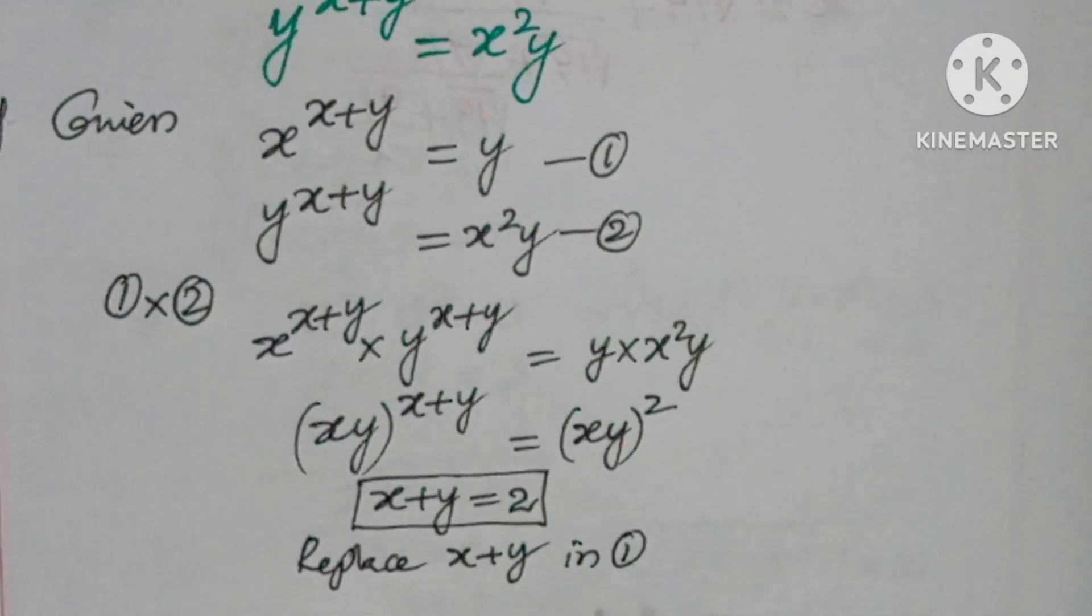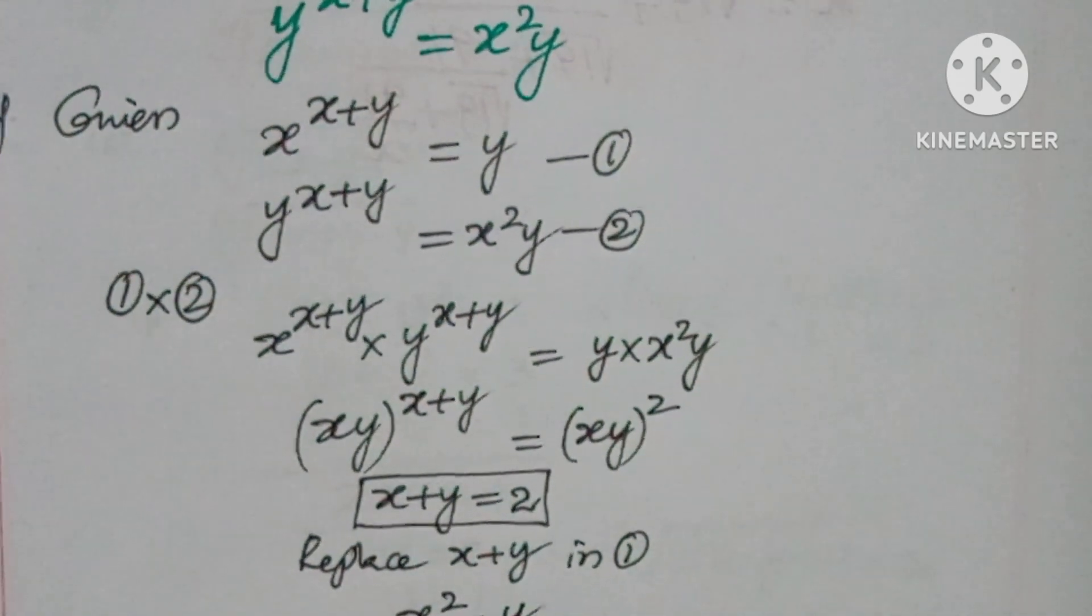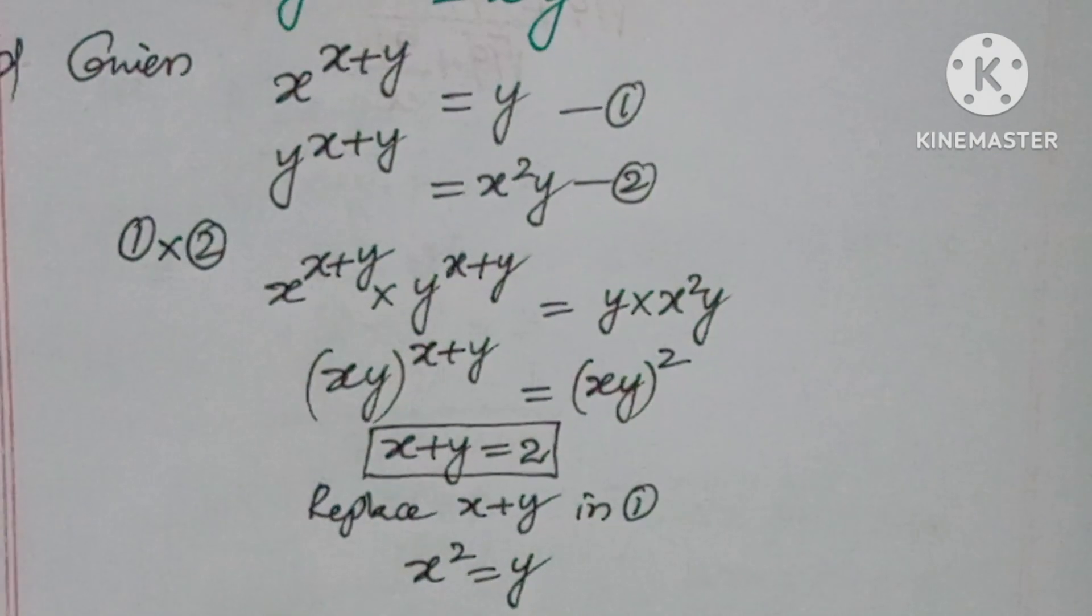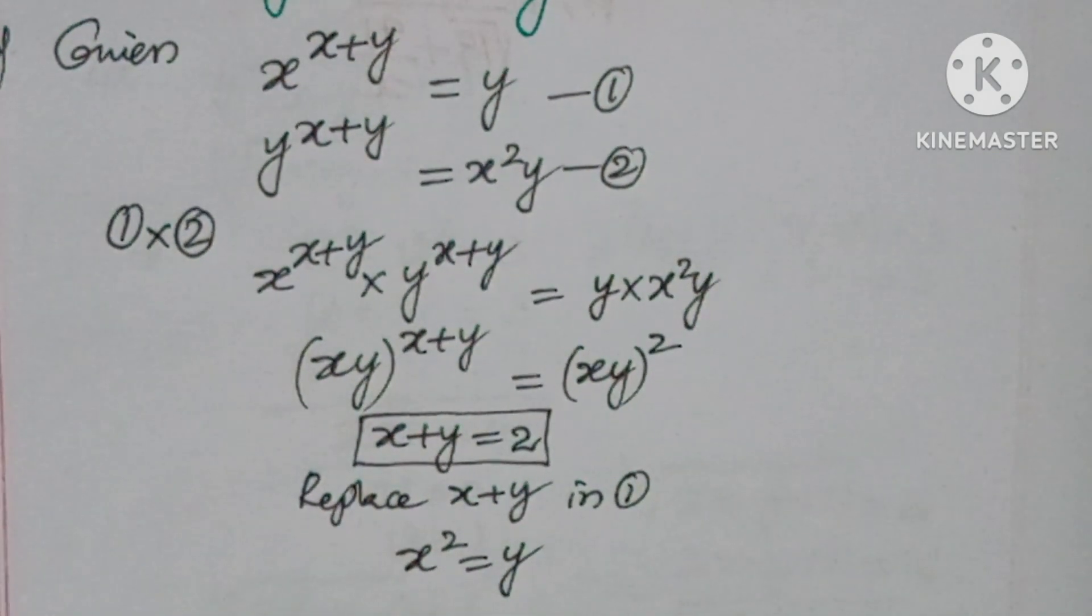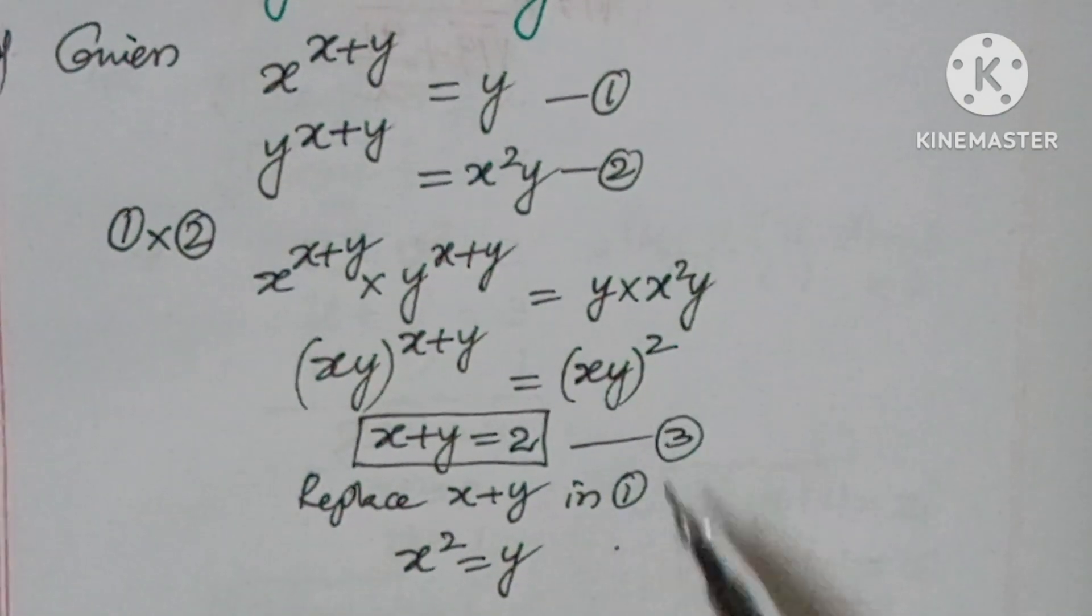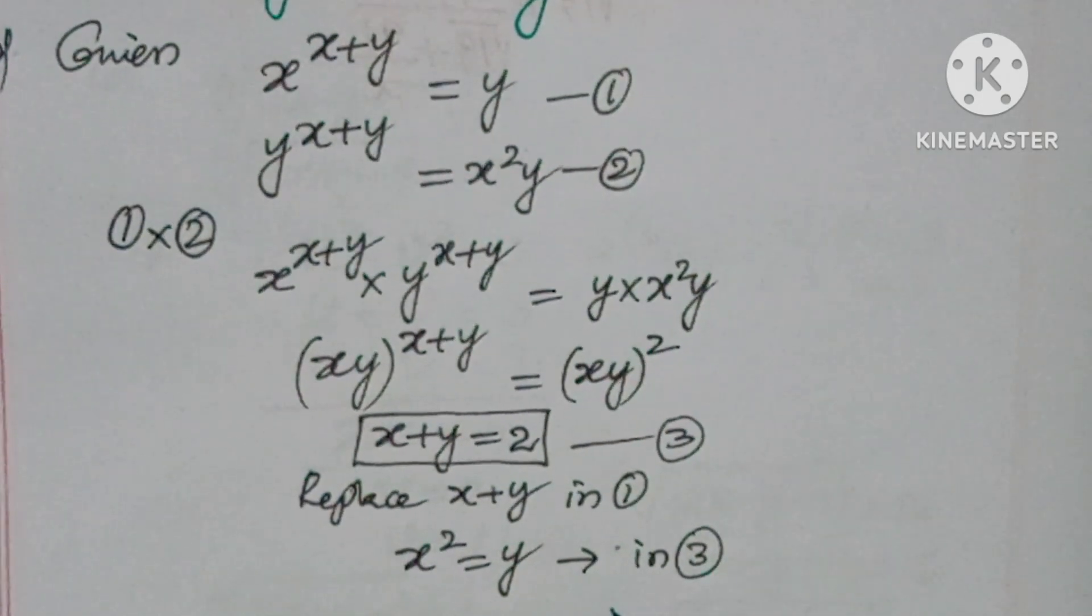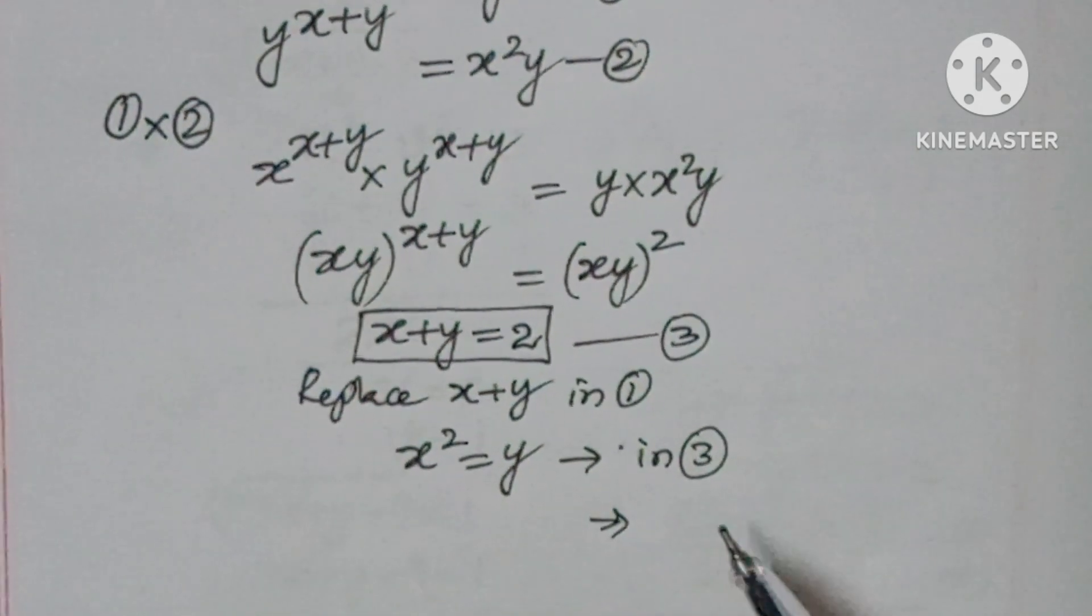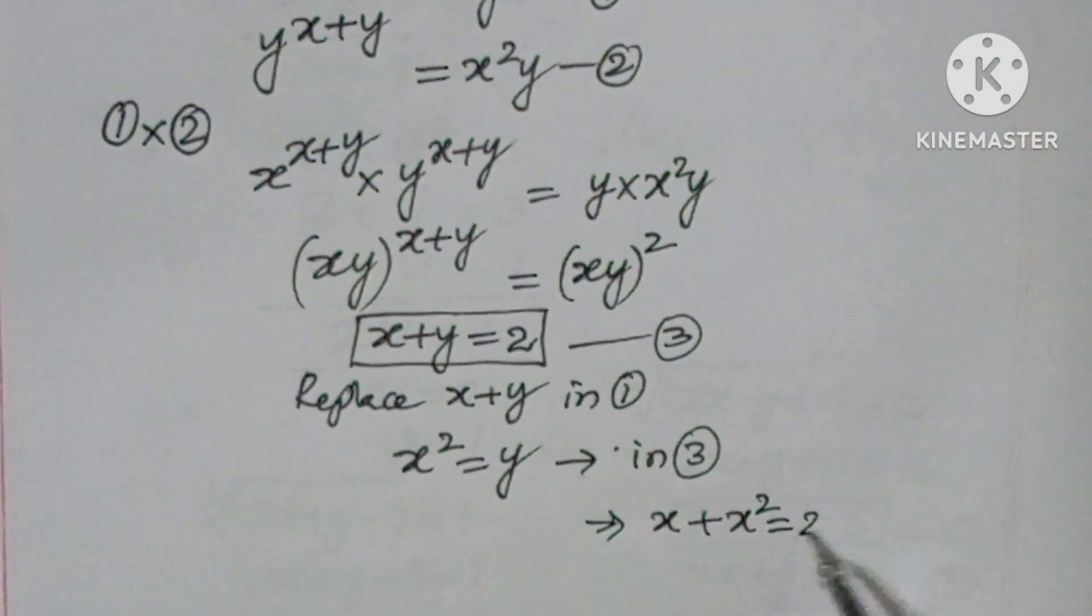Replace x plus y in equation one. Now you will get x squared equals y. Now substitute this value in the third equation. You will get x plus x squared equals 2.